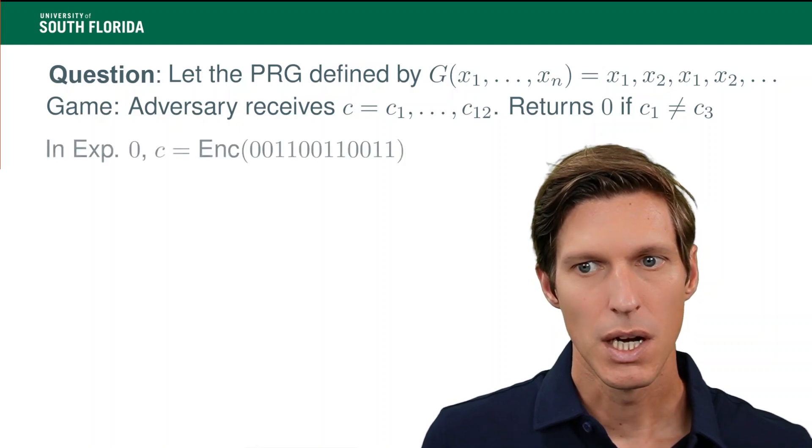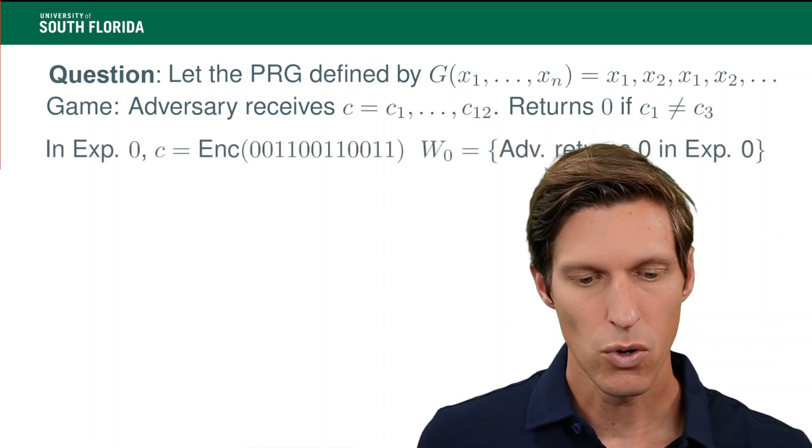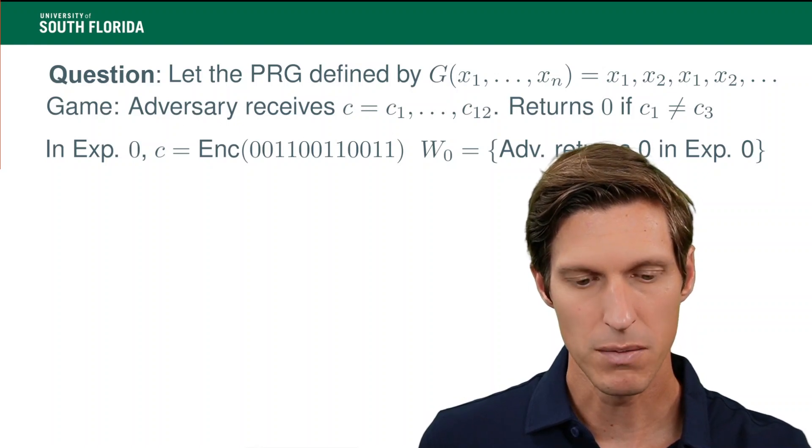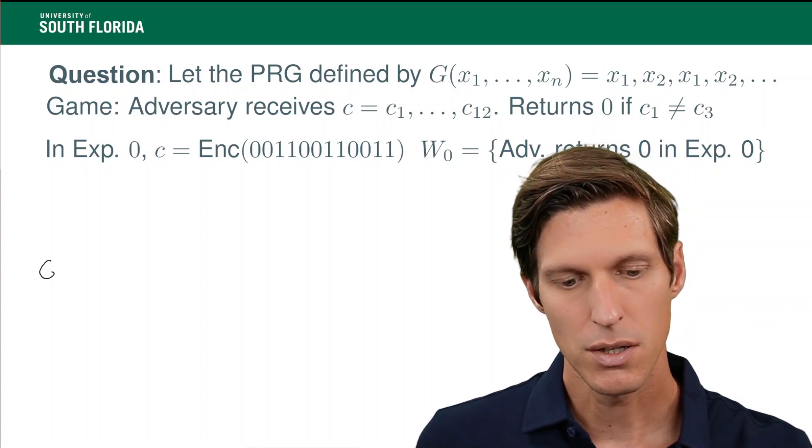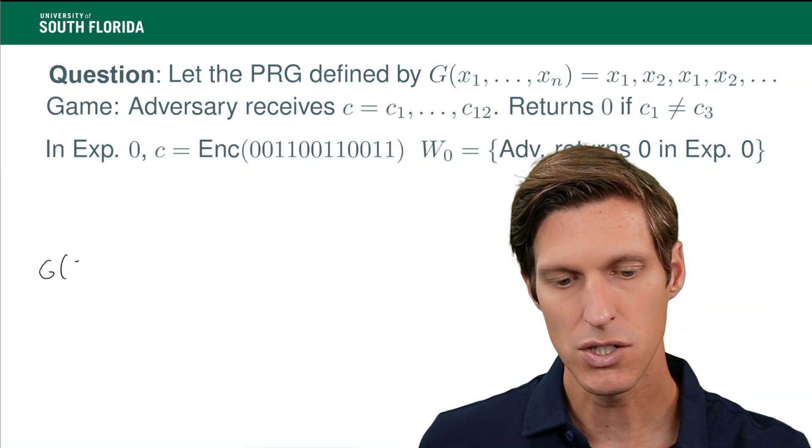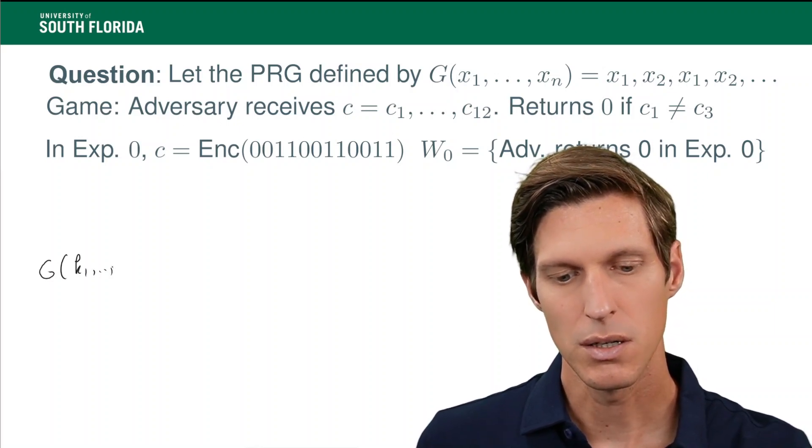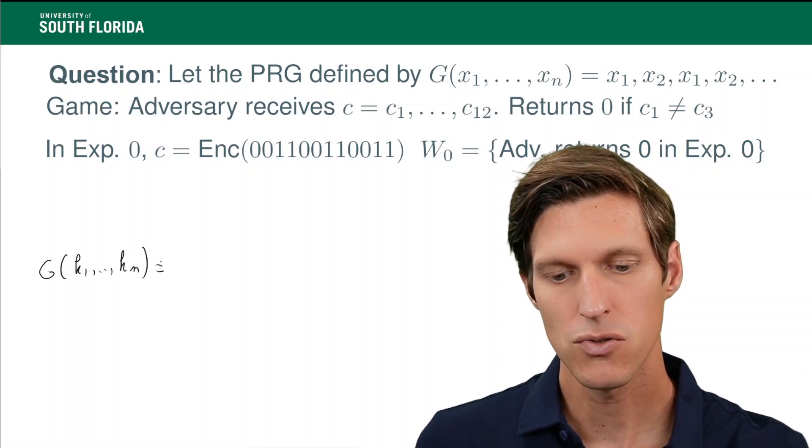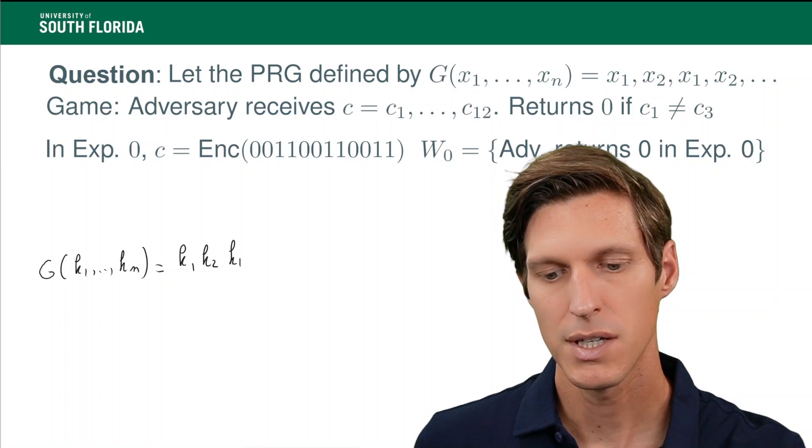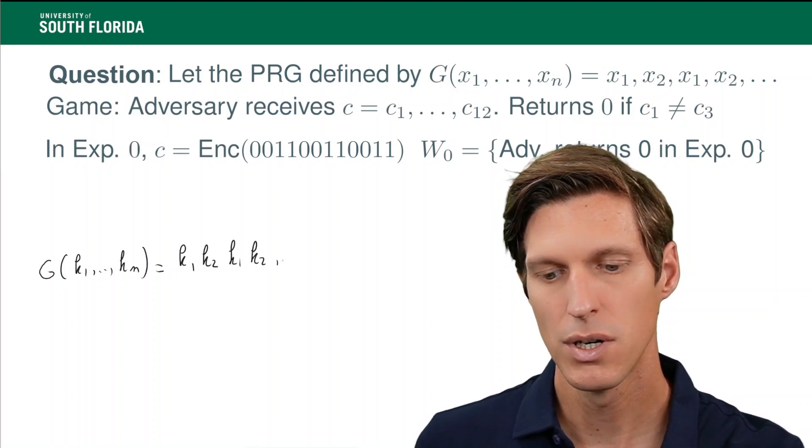So we will calculate the experiment the probability of returning 0 in that experiment. So remember, that's the keystream here. Because of the definition of G, the keystream looks like this: k1, k2, k1, k2, etc.